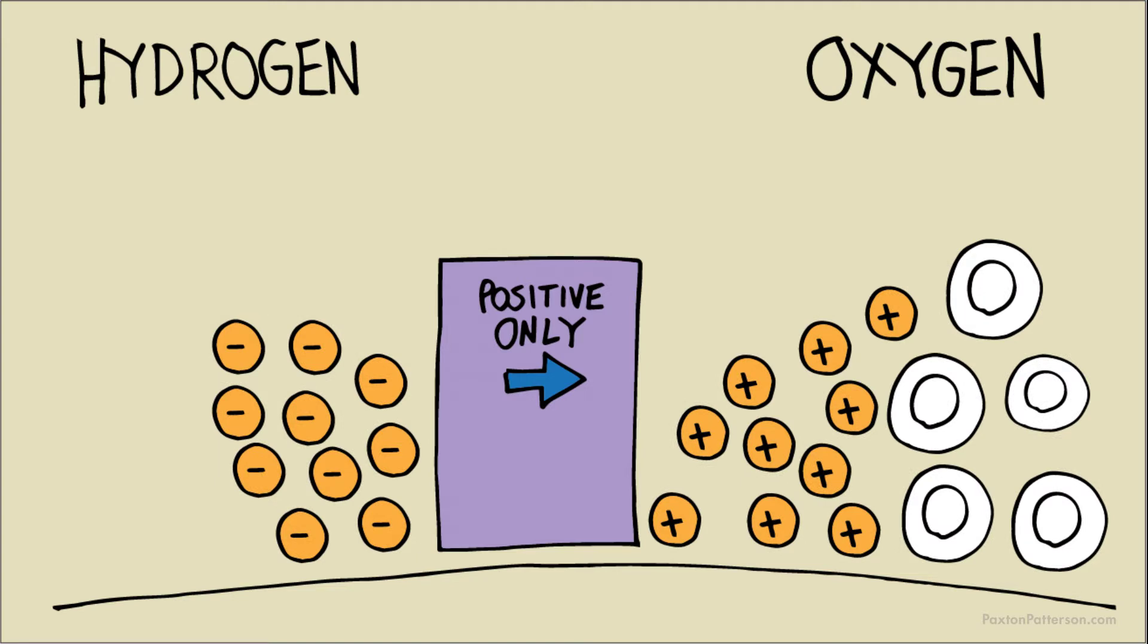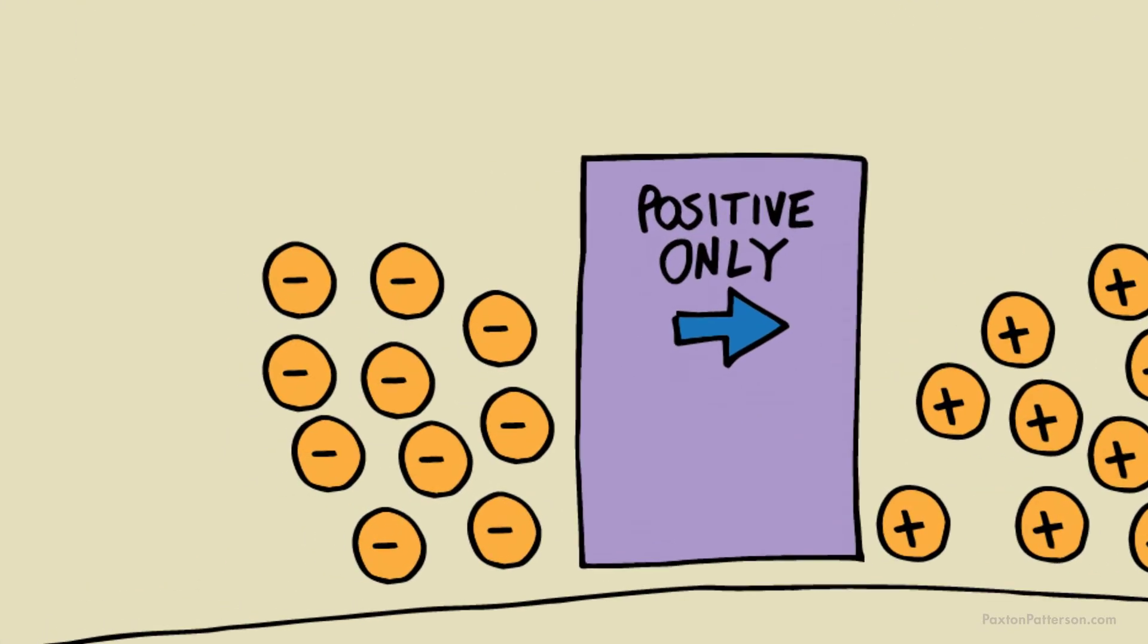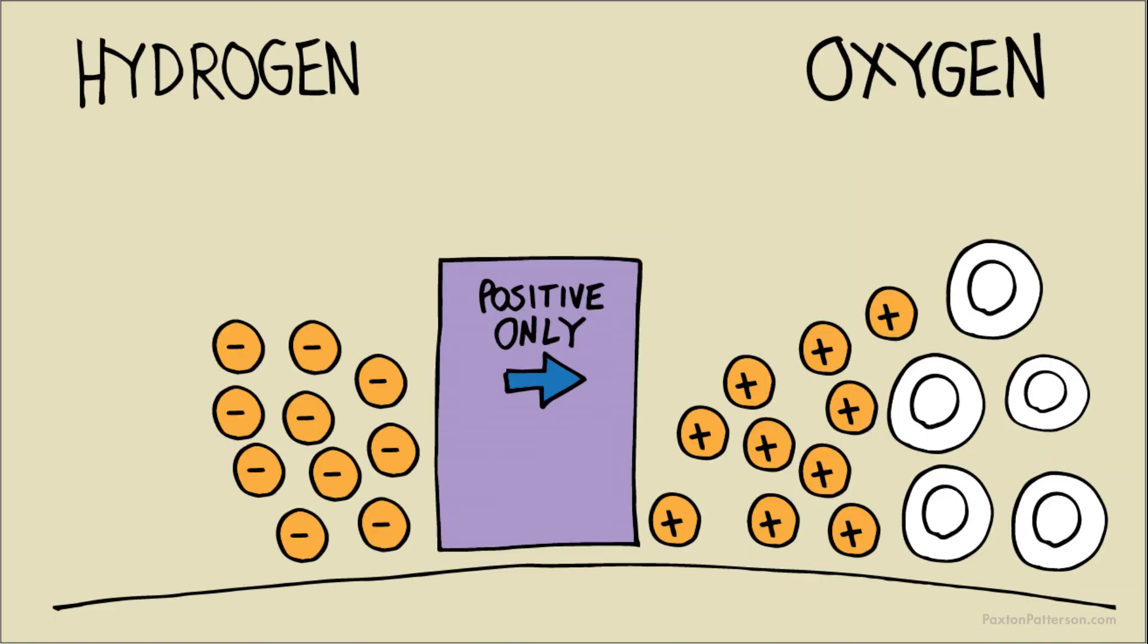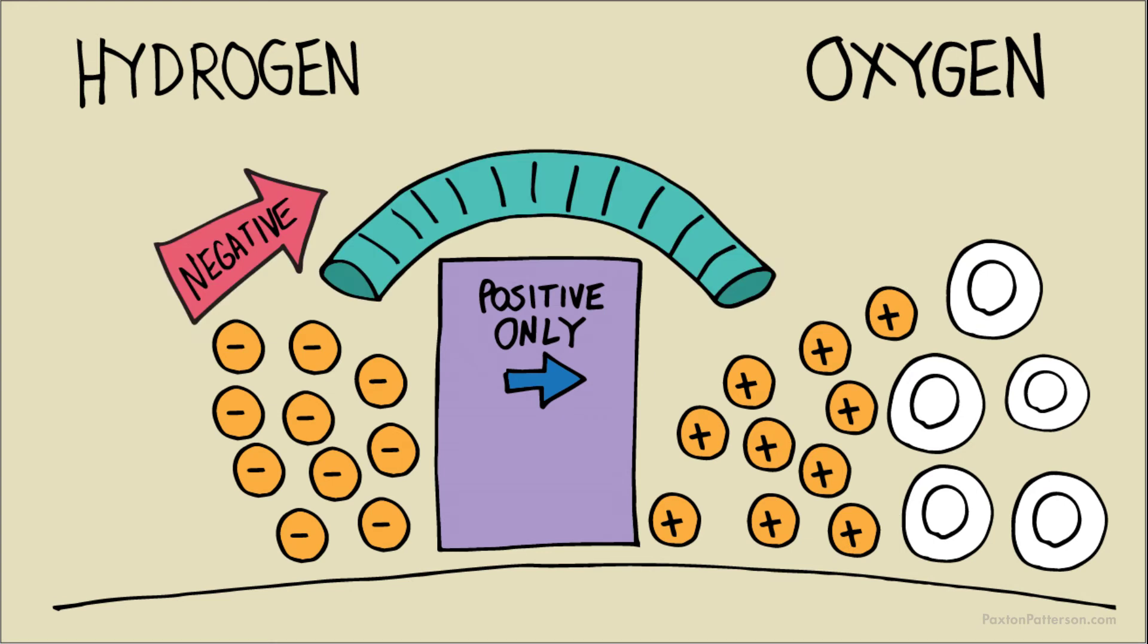But this leaves the hydrogen electrons because they're so negative. Dude, that's not fair. They need to catch up with the protons, and the only way over there is this way, through a wire path that goes around the membrane.